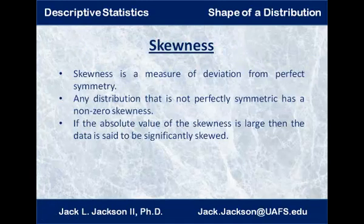Skewness is a measure of deviation from perfect symmetry. If a graph has a skewness of zero, that means it's perfectly symmetric. Distributions that are almost symmetric will have a skewness pretty close to zero, but any distribution that's not perfectly symmetric will have some non-zero skewness. If the absolute value of the skewness is close to zero, you're pretty much symmetric. If the skewness is large in absolute value, the data is said to be significantly skewed.